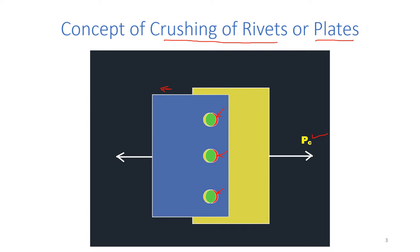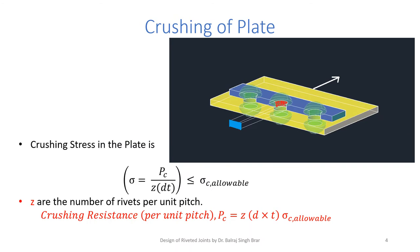According to the definition of crushing stress, we want to measure the stress at this interface — and that is known as crushing stress. For example, if the plates are of poor strength, the interface surface highlighted in red will be under crushing. The crushing stress is the crushing resistance measured per unit pitch.